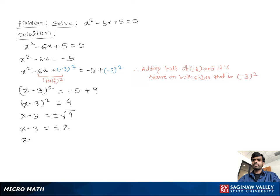We separate into two equations: x minus 3 equal to positive 2, or x minus 3 equal to negative 2. Solving these: x equal to 3 plus 2, which is x equal to 5, or x equal to 3 minus 2, which is x equal to 1. These are the solutions.